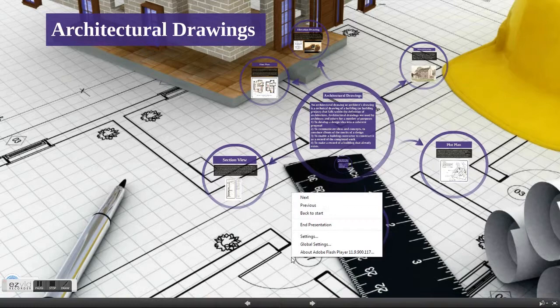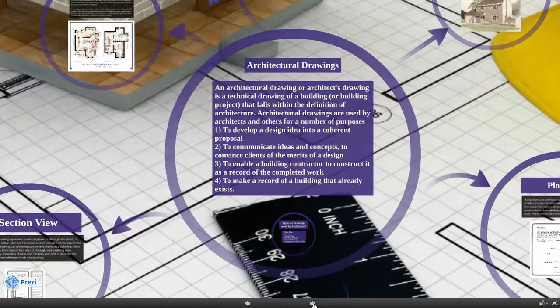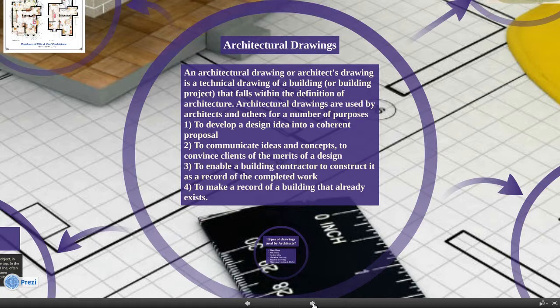There are certain plans that an architect has to draw. So first of all, what are architectural drawings? An architectural drawing or architect's drawing is a technical drawing of a building or building project that falls within the definition of architecture. Architectural drawings are used by architects and others for a number of purposes. The first purpose is to develop a design idea into a coherent proposal.